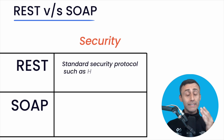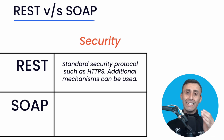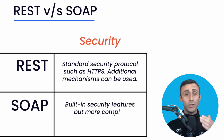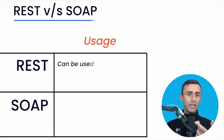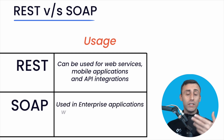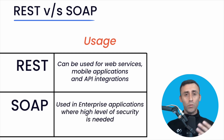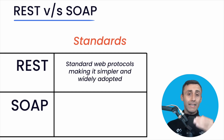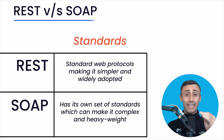Security: REST relies on standard security protocols such as HTTPS and can use additional mechanisms like API keys or OAuth for authentication. SOAP has built-in security features including WS-Security, but can be more complex to implement. Usage: REST is commonly used for web services, mobile applications, and APIs where simplicity, speed, and scalability are essential. SOAP is historically used in enterprise-level applications, often in scenarios where a high level of security and ACID-compliant transactions are required. Standards: REST relies on standard web protocols, making it simpler and widely adopted. SOAP has its own set of standards and specifications, which can make it more complex and heavyweight.